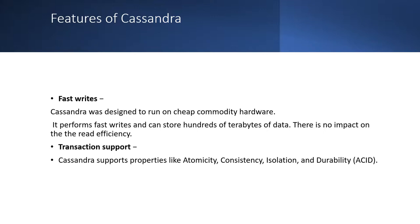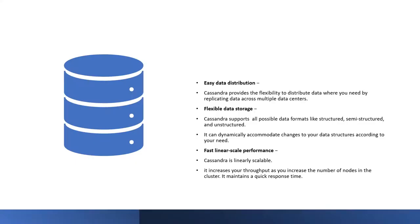Cassandra is designed to run on cheap commodity servers and performs fast writes. It can store terabytes of data without impacting read efficiency. Cassandra provides flexibility to distribute data by replicating it across multiple nodes and data centers. It supports all possible data formats — structured, non-structured, and semi-structured — and can dynamically accommodate changes to your data set according to your requirements.